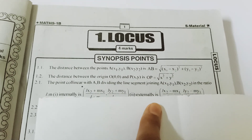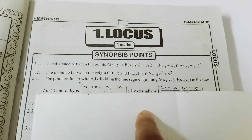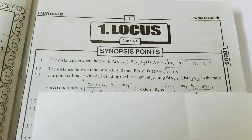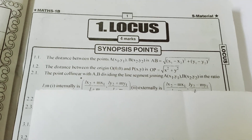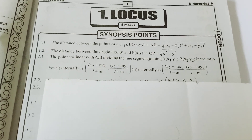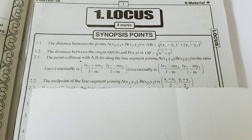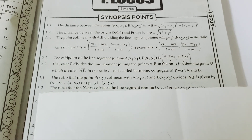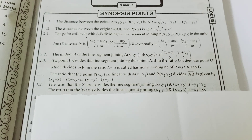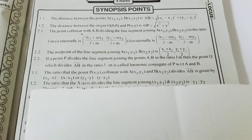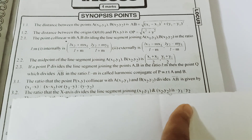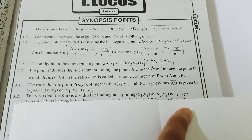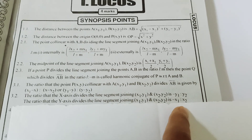Next, the section ratio formula: (lx2 plus mx1) by (m plus n) and (ly2 plus my1) by (m plus n). This is the internal division formula; for external division, use minus. This is the midpoint formula. Importantly, check the ratio when an axis divides the line segment: x-axis divides in ratio minus y1 : y2, and y-axis divides in ratio minus x1 : x2.